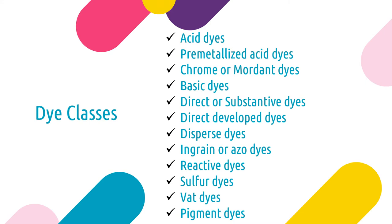So I'm just going to talk about some of the characteristics of the die classes. Acid dyes usually provide very bright colors. Pre-metallized acid dyes do as well, but not as bright, so acid dyes are going to impart the most color. Chrome dyes, which are also called mordant dyes, do more dull colors and they have really light colorfastness. Basic dyes have bright shades with good colorfastness to light, so they're able to hold on to light well.